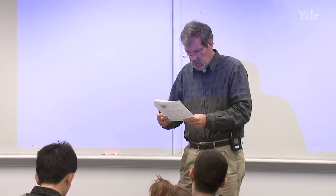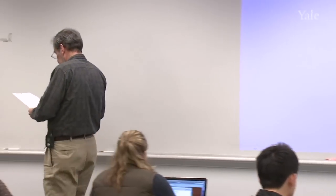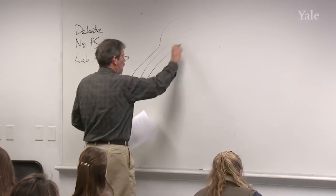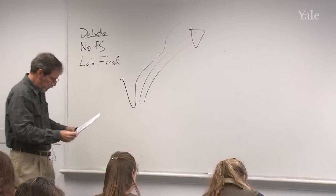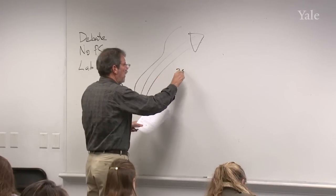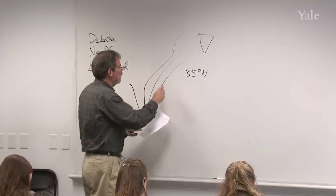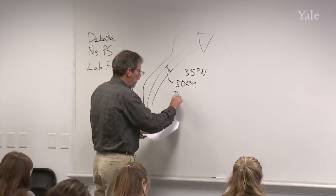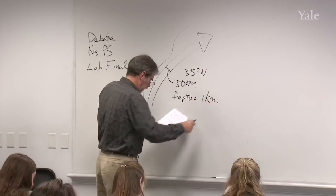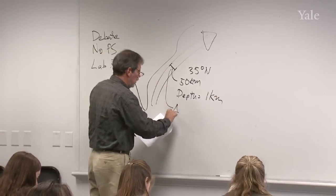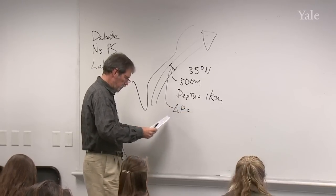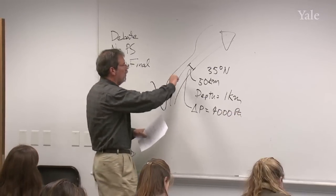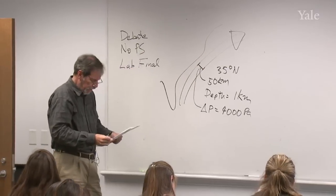The first question was one of the most difficult ones on the exam. The point is that you're given the Gulf Stream coming up along the east coast of the United States at 35 degrees north latitude. You are given information that this is 50 kilometers wide, has a depth of 1 kilometer, and the pressure difference across it, delta p, is 4000 pascals. You are asked to compute the volumetric flow rate in the Gulf Stream.